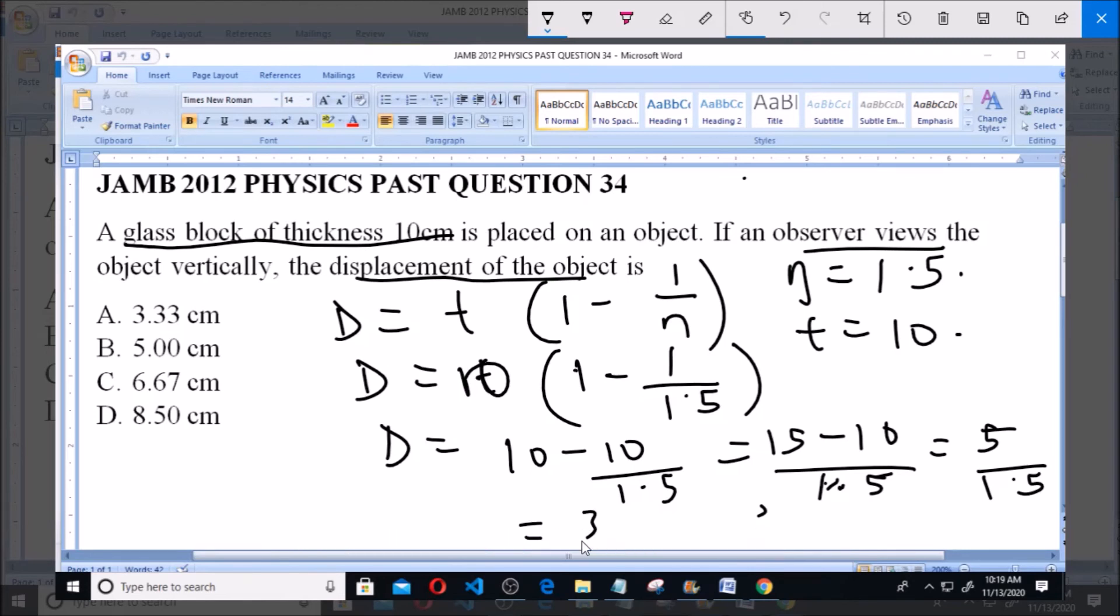5/1.5 equals 3.33 cm. So 3.33 cm is option A.